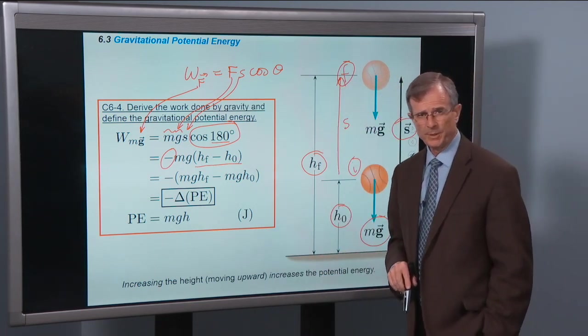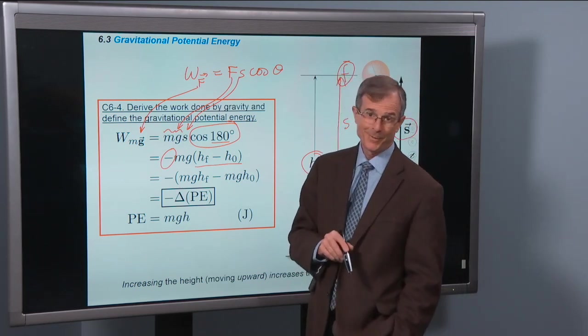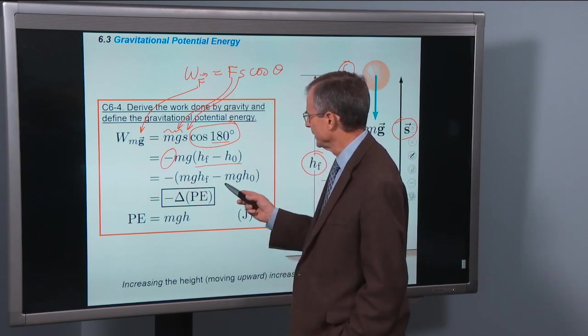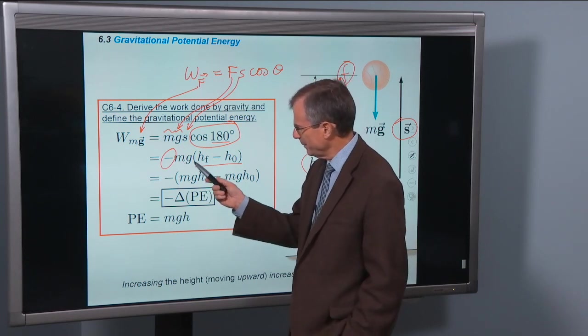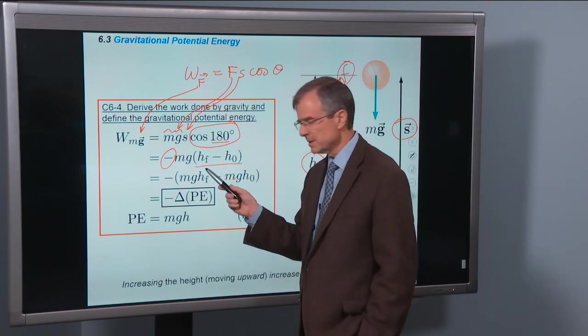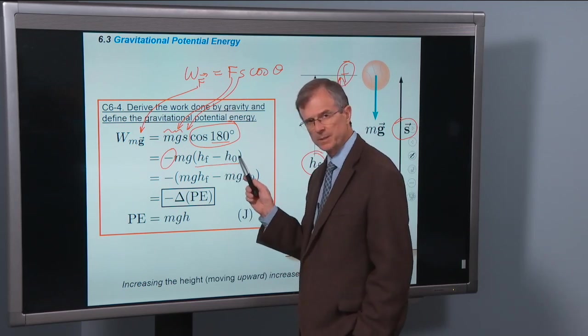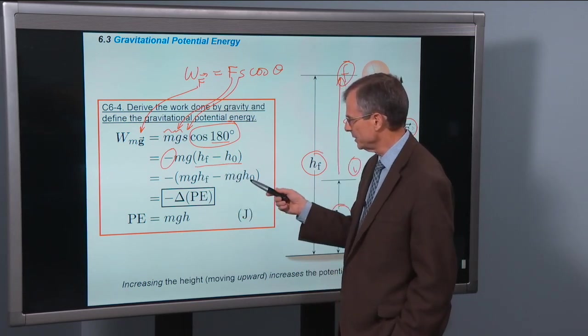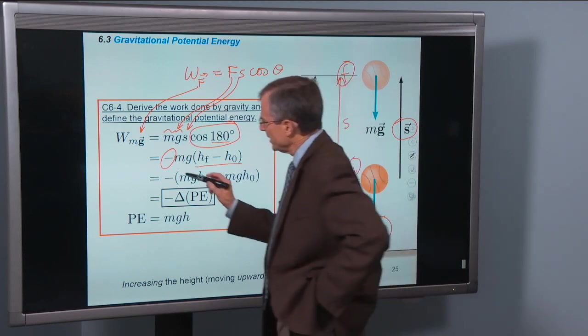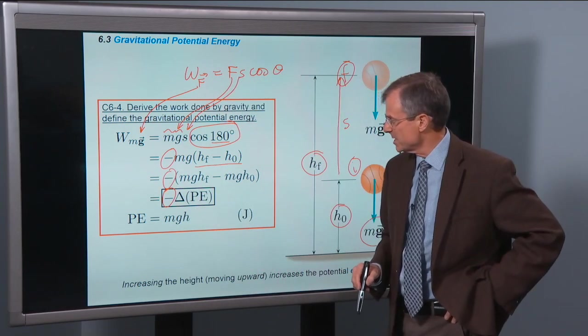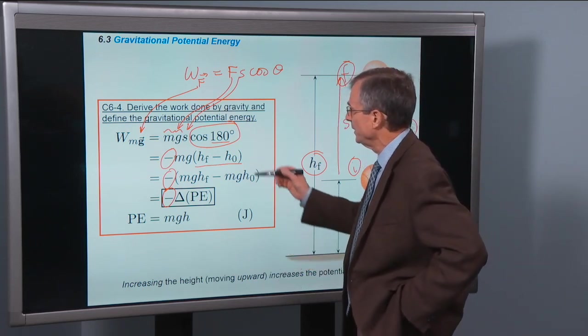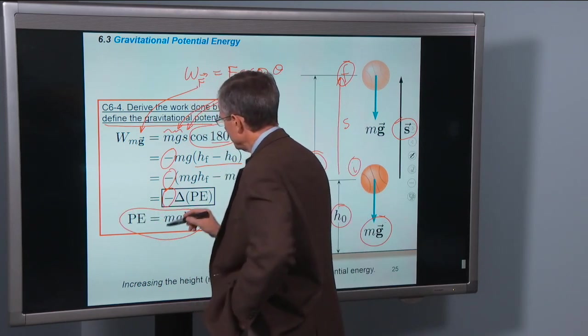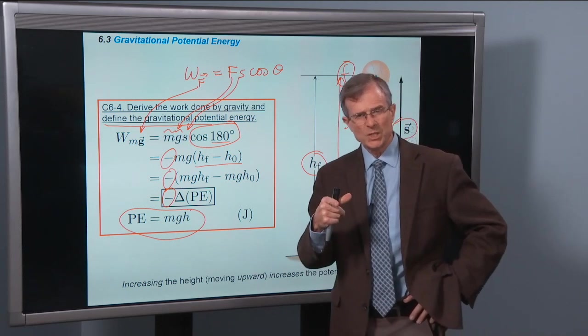I'm going to rearrange this a little bit to make it look like the way I want it to look. m, g, h, f. So I'm going to distribute the m and the g. I'm going to take them inside the parentheses. When I do that, because it's a difference, a sum of hf minus h0, I have to multiply mg times hf minus mg times h0. This minus sign is still coming along for the ride. It's not cutting any ice right now. But I want to define, we've been asked to define the gravitational potential energy. I want to define the gravitational potential energy to be m times g times h.